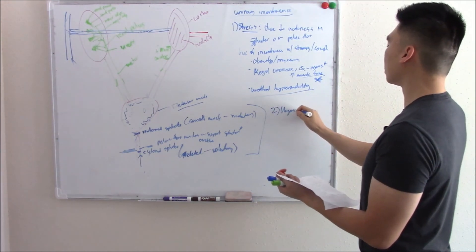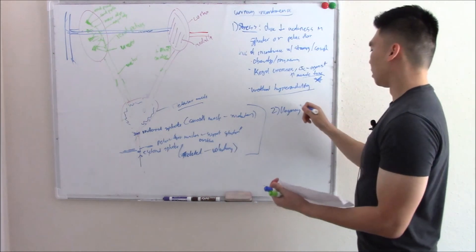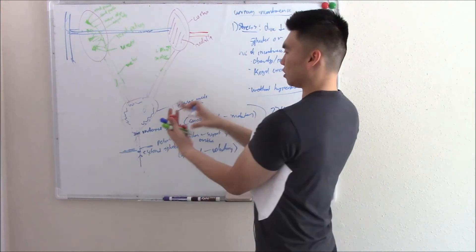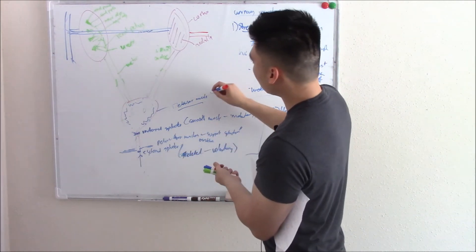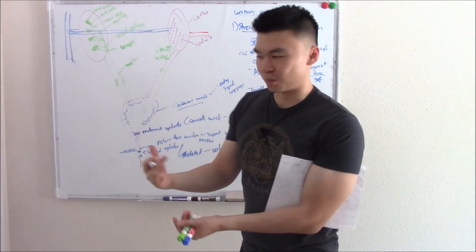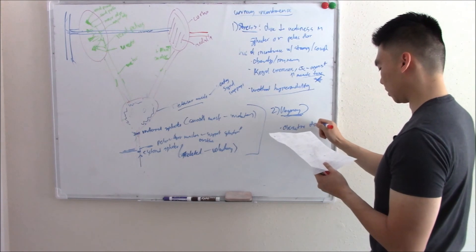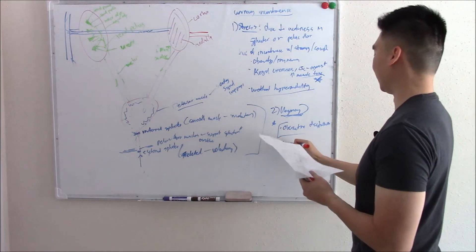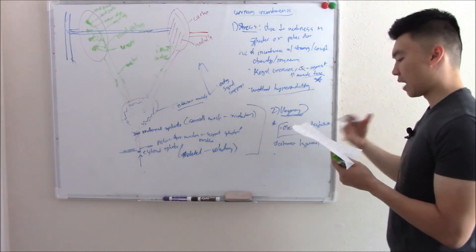Another type is urge incontinence. The patient is just sitting down minding their business and suddenly has an overwhelming urge to urinate, sometimes not making it to the bathroom in time. The cause is an overactive detrusor muscle — it sends signals to the brain inappropriately, whether there's no urine, some urine, or a lot of urine. The buzzword is detrusor hyperactivity.